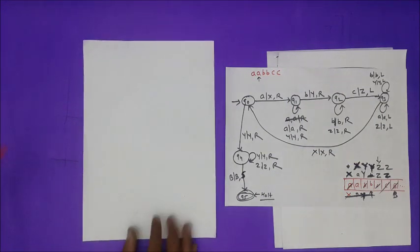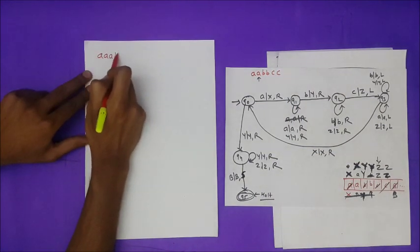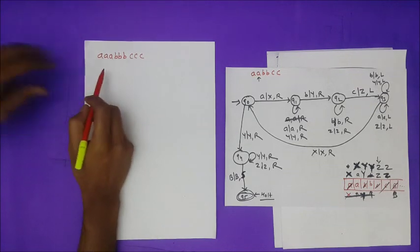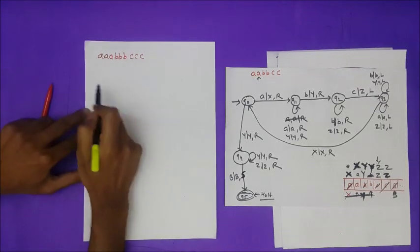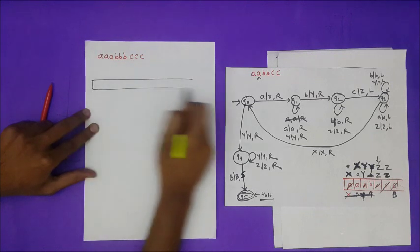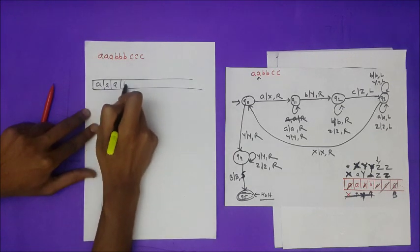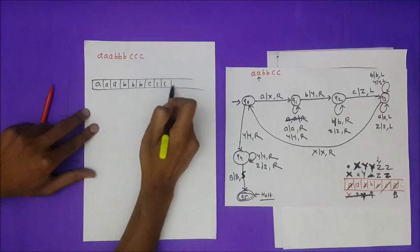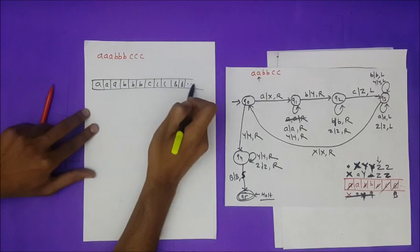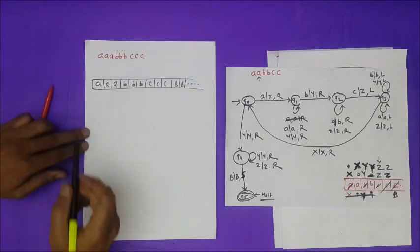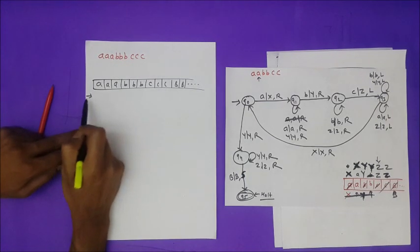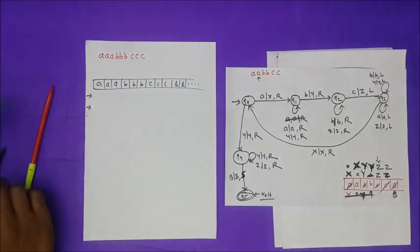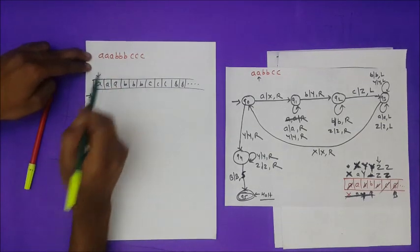Now let's verify the valid string A, A, A, B, B, B, C, C, C. We place this onto the tape with remaining cells as blank symbols B. We will trace scan by scan, with the pointer position shown from the top.